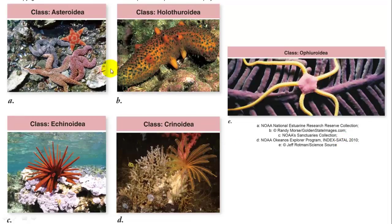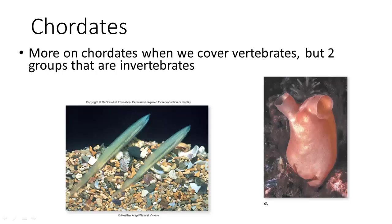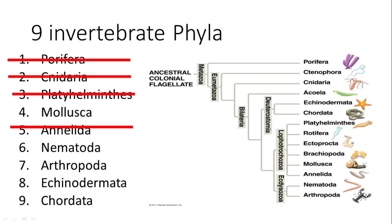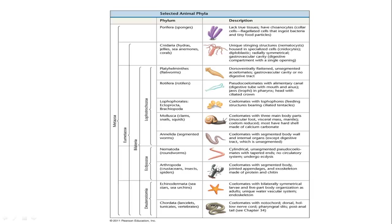The five classes of echinoderms include brittle stars, sea stars, sea cucumbers, sea urchins and relatives, and one additional group. Finally, chordates: while we'll cover them more with vertebrates, two invertebrate chordate groups are lancelets and tunicates. A lancelet looks like a lance; a tunicate (sea squirt) has a siphon mechanism filtering water in and out. Those are the nine invertebrate phyla we've covered, and you've already reviewed these in lab.